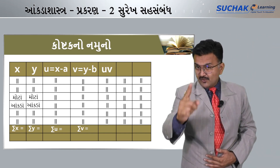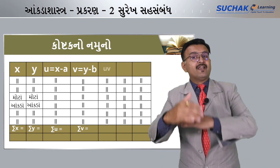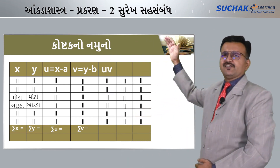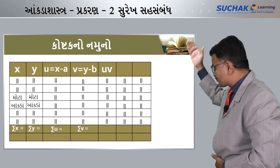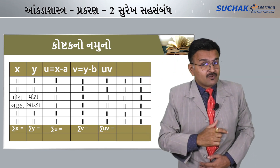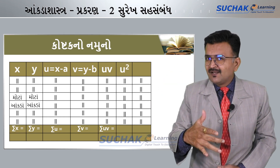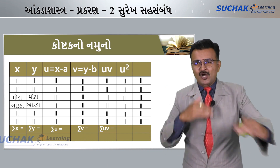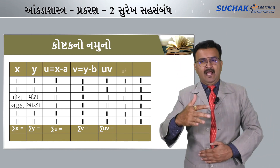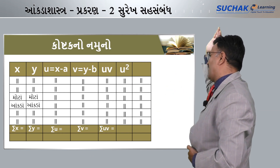Now we need U and V no GUNAKAR — the product UV. We need Σuv — the sum of products of U and V. For that we also need U² and V² columns. So the columns needed are: U, V, UV, U², V², and their sigma (sum) values — sigma u, sigma v, sigma uv, sigma u square, sigma v square.